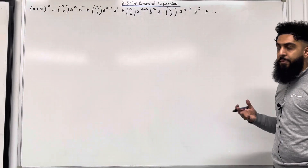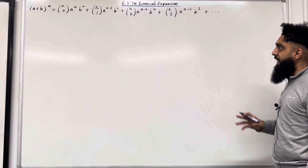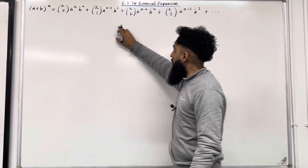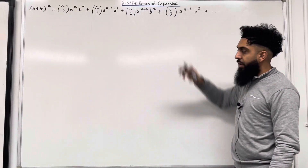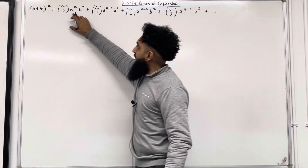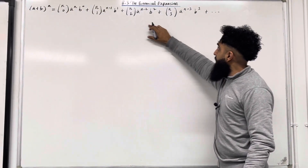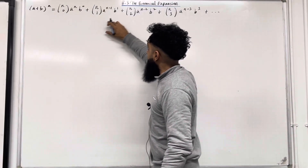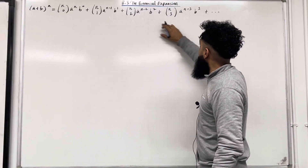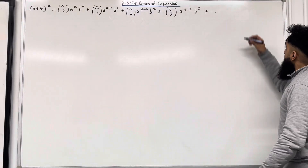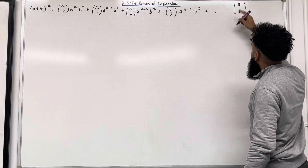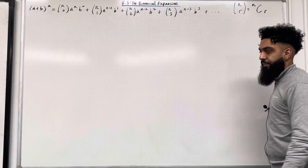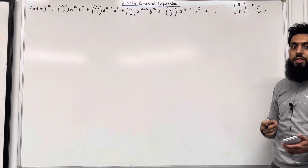Let's have a look at the pattern in this formula. Consider the choose part — if we look at the bottom number, each time we're increasing by 1. Now focus on the powers of a: each time we're decreasing the powers of a by 1. And the powers of b: each time we're increasing the powers of b by 1. Note that n-choose-r in brackets can be rewritten as nCr, which was covered in 8.2 factorial notation.